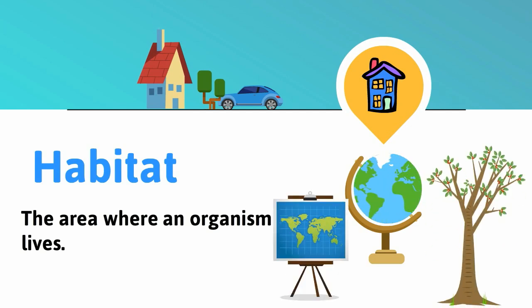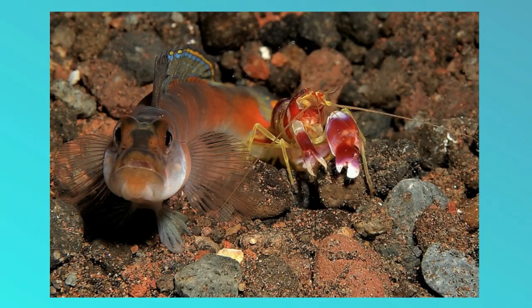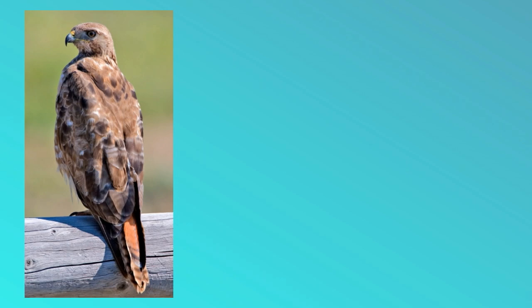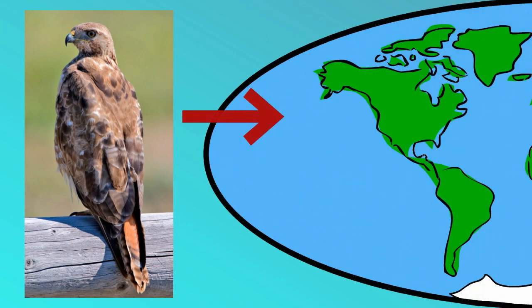For example, the pistol shrimp spends most of its life in a small burrow that it shares with its friend the goby fish. On the other hand, a hawk will have a much larger habitat because it can adapt to just about anywhere in its surrounding area.